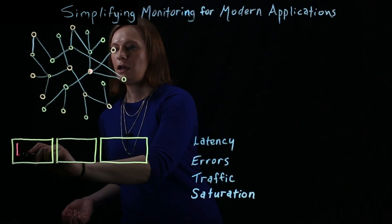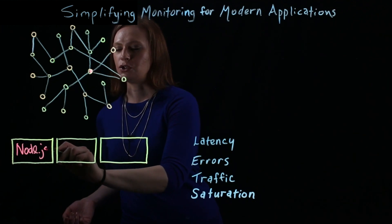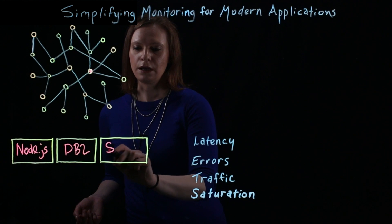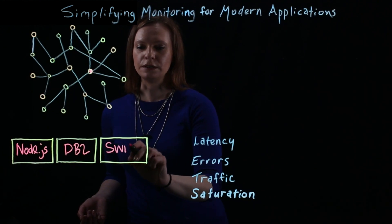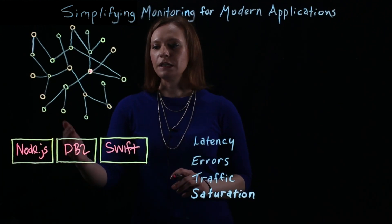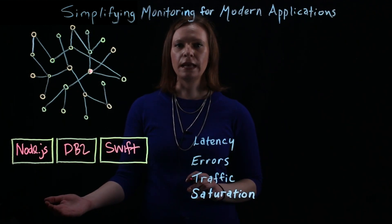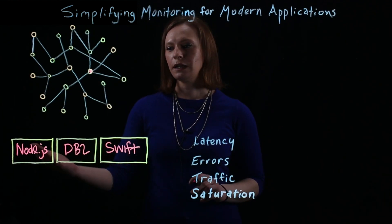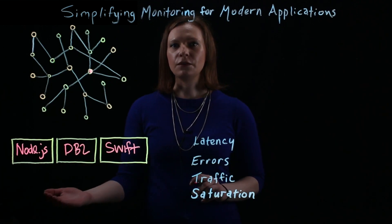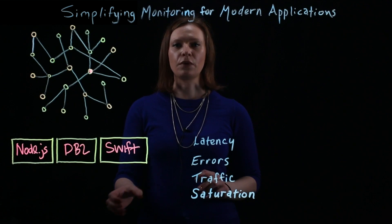For example, one dependency is built on Node.js, one is a DB2 database, another is written in Swift, and so on. All of these have different metrics that are typically monitored, and I may not be an expert in any of these different technologies. So it may be difficult for me personally to go in and figure out what the problem is.